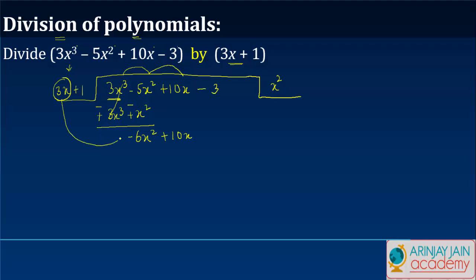Now, 3x and 6x square, so what should I multiply 3x with so that I get minus 6x square, so I do that as minus 2x. Minus 2x times 3x gives me minus 6x square, and 1 into 2x gives me minus 2x.